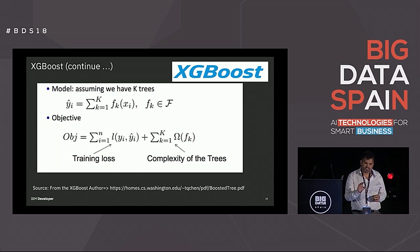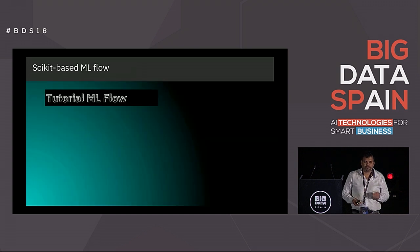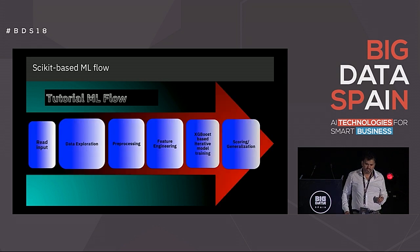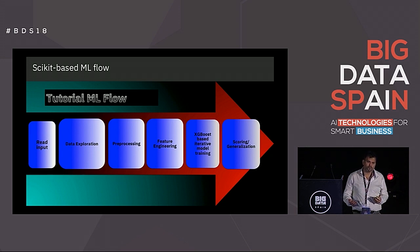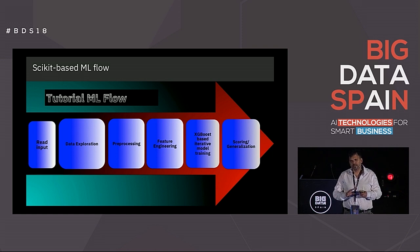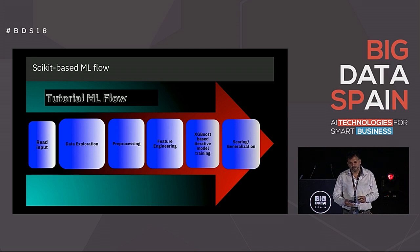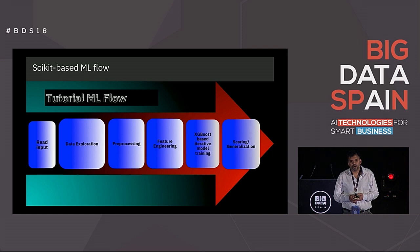Let's look at what data scientists typically do to build their models. First they read the input, then they do exploration to get a feel for the data. Then they clean the data — removing strings, applying one-hot encoding, numeric encoding, and so on. Then feature engineering, and then model building — which is a very iterative process. You create a hypothesis, build your model, test it, and if you don't like the result, you keep iterating. In the end, you test your model on data it has never seen before to see how well it generalizes.